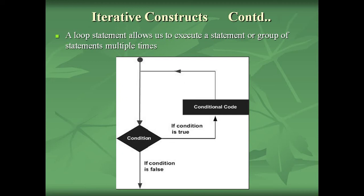This is the general form used by most programming languages for executing a group of statements multiple times. The looping statement checks for the condition. If the condition is true, a statement or block of statements gets executed. After execution, the condition is checked again. If the condition is true, the block is repeated. This process continues till the condition is true. When the condition becomes false, it terminates the loop and goes to the next statement.